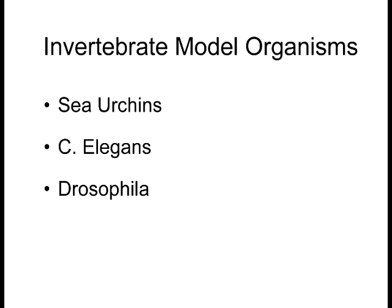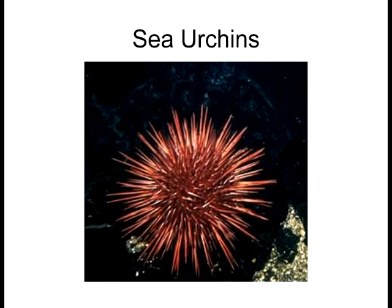Sea urchins, C. elegans, and Drosophila are three model invertebrate organisms used for developmental biology research. Over the coming weeks we'll explore the advantages and disadvantages of each and what they teach us about ourselves. Many medical discoveries come from studying these invertebrate models. C. elegans was one of the first organisms to have its entire genome sequenced, yielding significant insights. Sea urchins have radial holoblastic cleavage — initial divisions are along the same axis, dividing cells evenly.